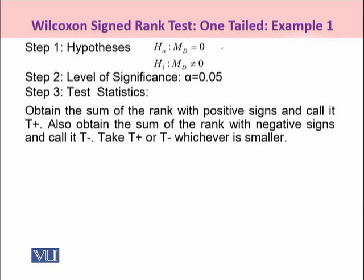So students, the pair of hypothesis which we are going to make here, that is the median difference is 0 and the alternative would be that median difference is different from 0. So the level of significance as it is being given as 0.05, even if it is not given, we have a consensus on alpha being 5%. The next step is the test statistic. So we need to obtain the sum of the ranks with the positive signs and we would have to call them T+. Similarly, we have to obtain the sum of the ranks with the negative signs and we will have to call them T-.